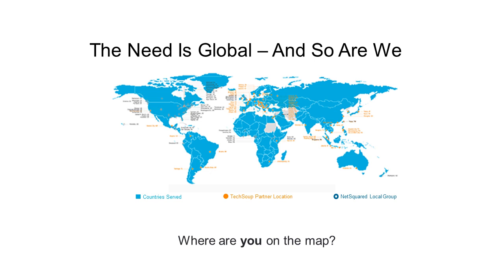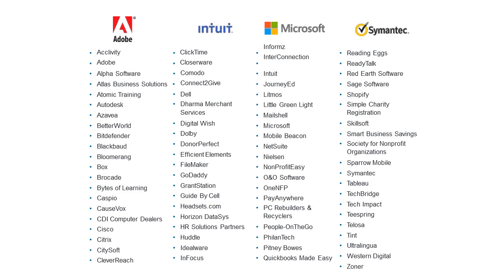A little bit about TechSoup: we are located in 236 countries and territories, and we have several technology partners. Because of those partnerships, we are able to serve over a million organizations. To give you a chance to use the Q&A box, go ahead and chat us where you are dialing in from, and I'll read a few of them out loud.